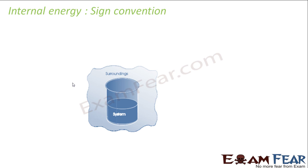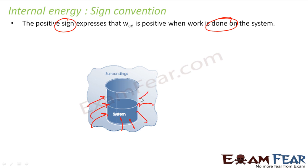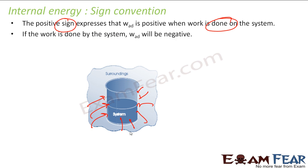Let me explain the sign convention of internal energy once again. Delta U is positive if the work done is on the system — that means you do work on the system and the system gains energy, so delta U is positive. If the system is doing work — the system is losing energy — then delta U is negative. If work is done by the system, the system becomes weaker and delta U is negative. If people are doing work on the system, the system becomes richer and delta U is positive.